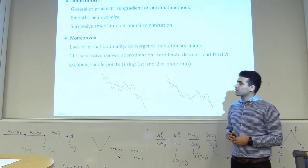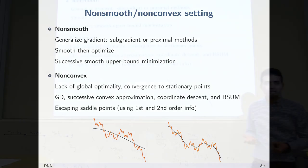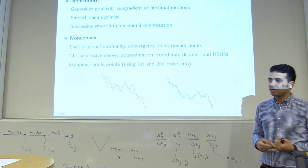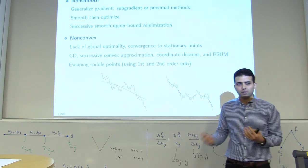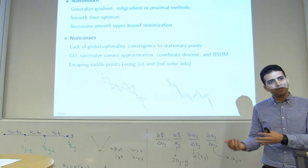For non-convex problems, we lose global optimality — it's NP-hard to find that. We've seen convergence to stationary points, which unfortunately may be saddle points. We've seen how to escape saddle points using first-order and second-order information: with first order, add perturbation to gradient descent or use stochastic gradient descent.